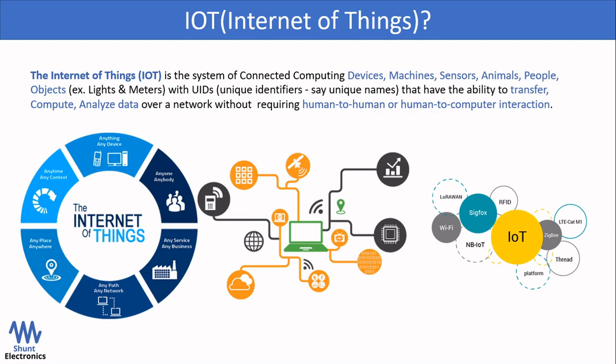We have all heard the buzzword IoT. What is the definition of IoT? The Internet of Things is the system of connected computing devices, machines, sensors, animals, people, and objects with unique identifiers that have the ability to transfer, compute, and analyze data over a network without requiring human-to-human or human-to-computer interaction.